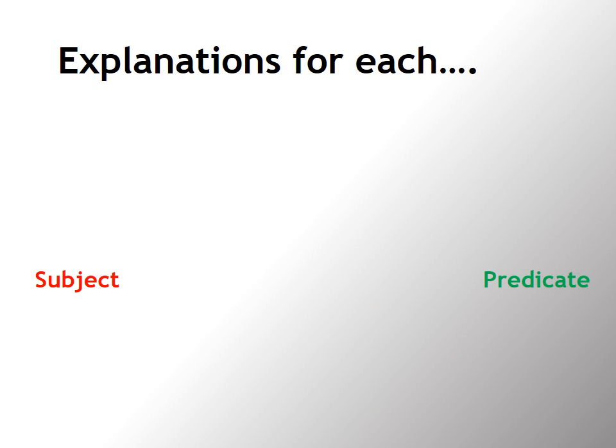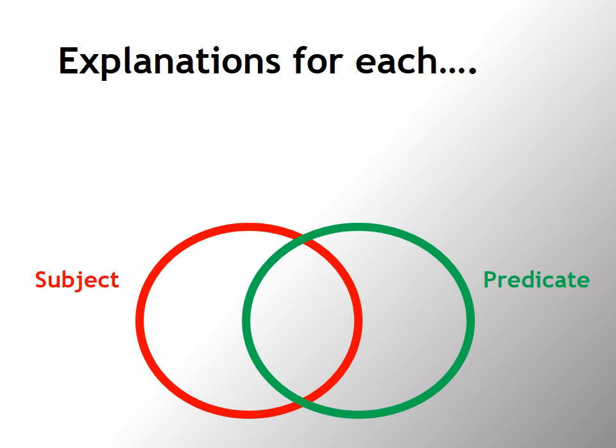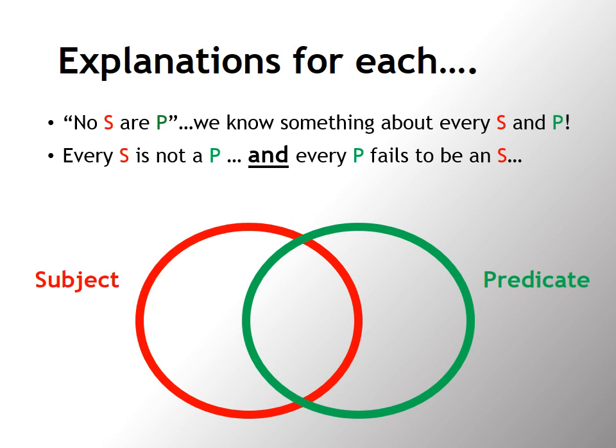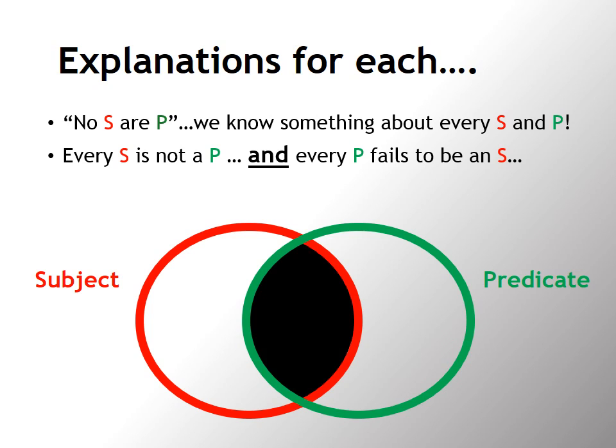So let's talk a little bit about E sentences, the ones that say that no S are P. If no S are P, you know something about every member of the S class and about every member of the P class. Every S fails to be a P, and every P fails to be an S. So that's what happens when you block out this section here in the middle. You can see now that nothing's allowed to have mutual membership in both classes at the same time.